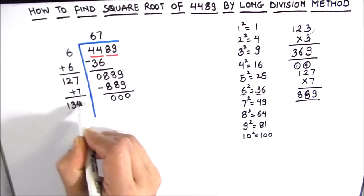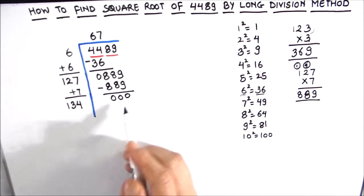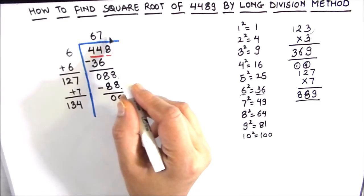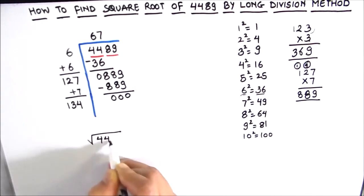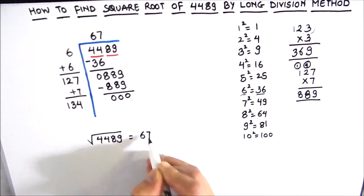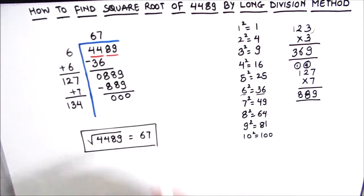And as our remainder is 0, we are going to stop. The number in the quotient is the square root of 4489. So the square root of 4489 is 67. This is our final answer.